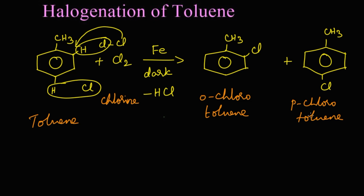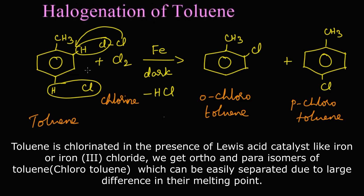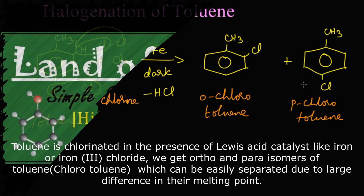To summarize: toluene is chlorinated in the presence of a Lewis acid such as iron or iron(III) chloride in a dark atmosphere. If the reaction occurs at the ortho position we get ortho-chlorotoluene, and if at the para position we get para-chlorotoluene. Both reactions are possible, giving a mixture of the two products. These mixtures can be easily separated due to the large difference in their melting points.